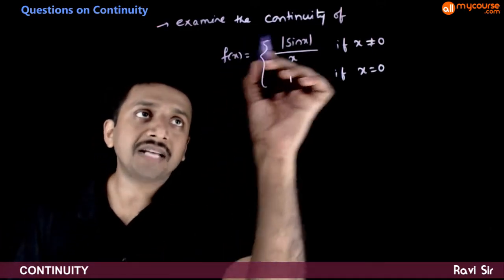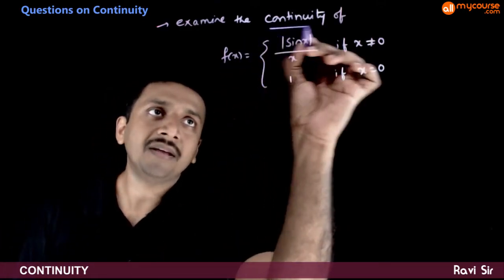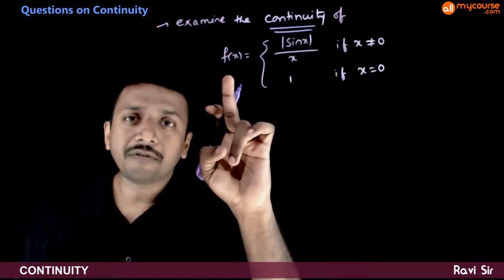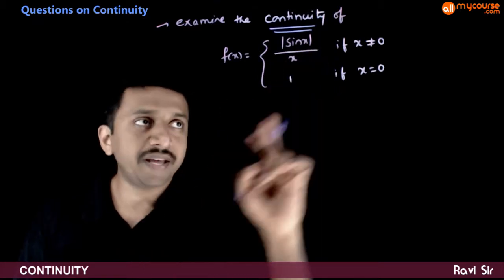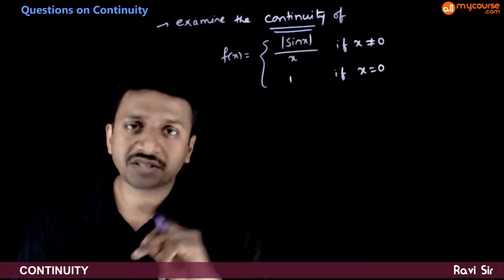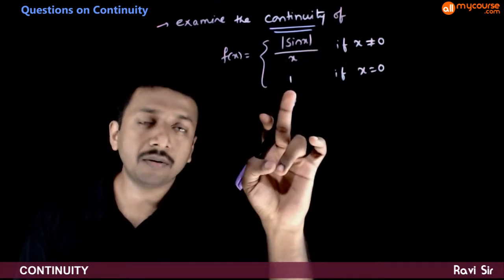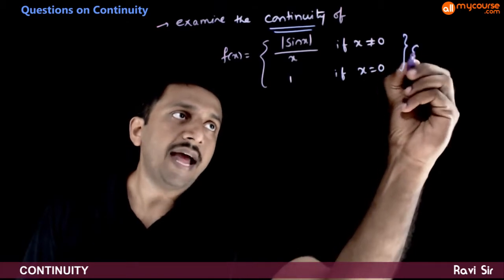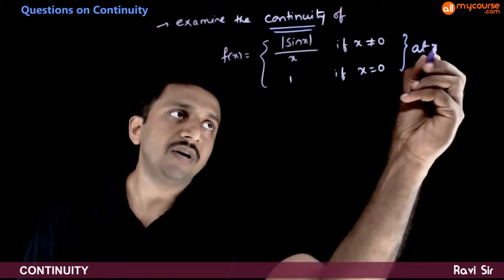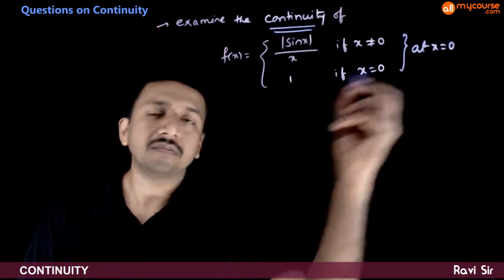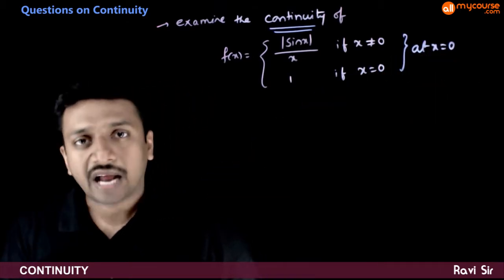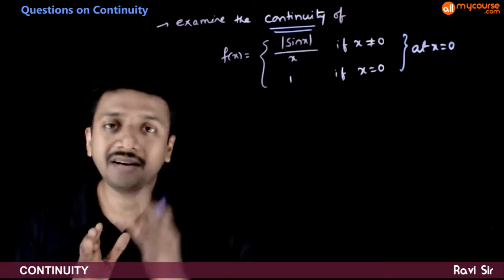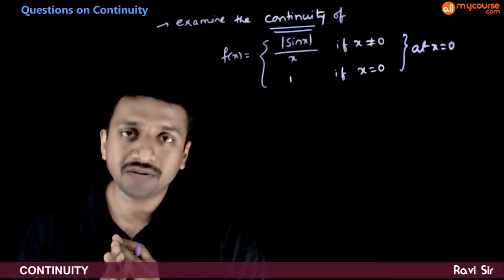In this question, you are asked to examine continuity of f(x) = |sin x| / x, if x ≠ 0, and equal to 1 if x = 0, at x = 0. You are asked to examine continuity of this function at x = 0.